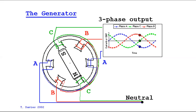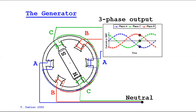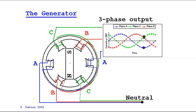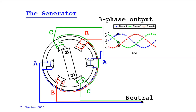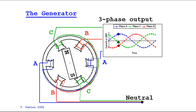Three-phase supply is generated by a synchronous generator. In all power plants we have synchronous generators. Inside the synchronous generator there are three different windings displaced by an angle of 120 degrees, generating three different voltages: V = Vm sin(ωt), V = Vm sin(ωt - 120°), and V = Vm sin(ωt - 240°).